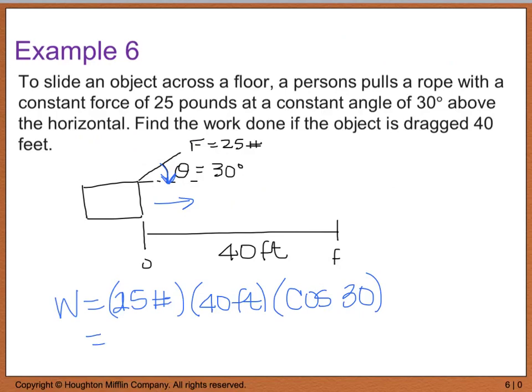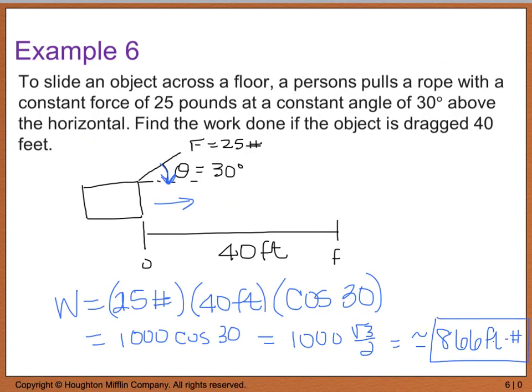Now, when you simplify this, you end up with 1,000 times the cosine of 30, and the cosine of 30 equals the square root of 3 over 2. So, I have 1,000 times the square root of 3 over 2, which gives me 500 square root of 3, which is approximately equal to 866 foot-pounds. And foot-pounds is a unit of work.